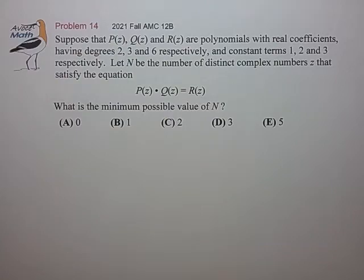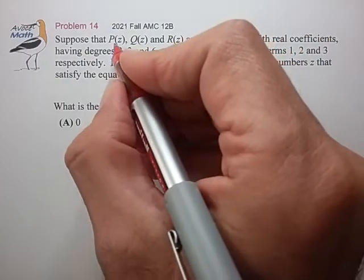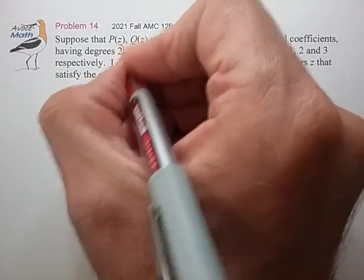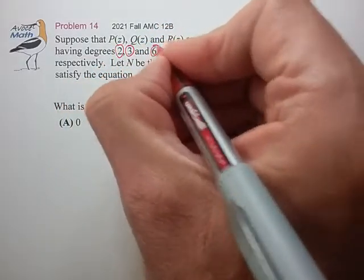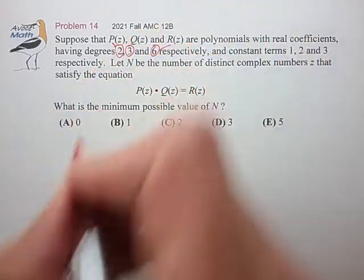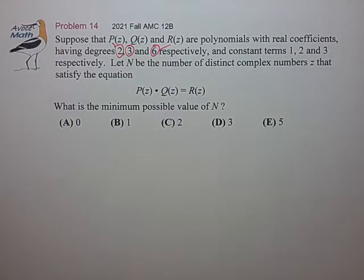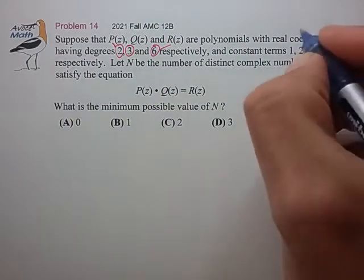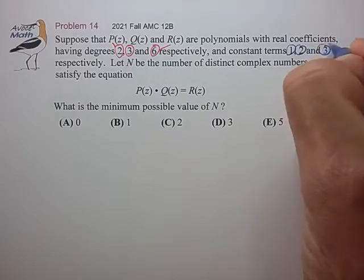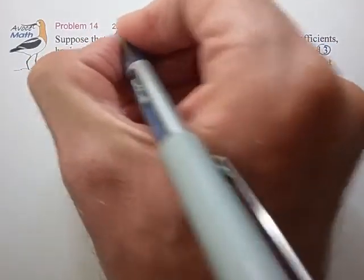Alright, so this is a lot of information to keep track of, so let me try to organize this a little bit. So P, Q, and R have degrees 2, 3, and 6, so let me write that in red, and it has constant terms 1, 2, and 3. Let me write that in blue.